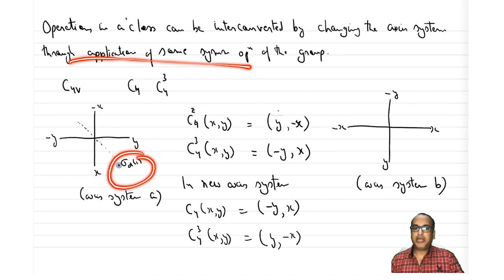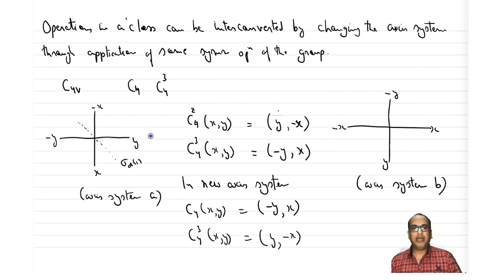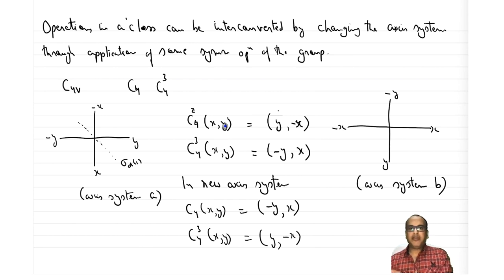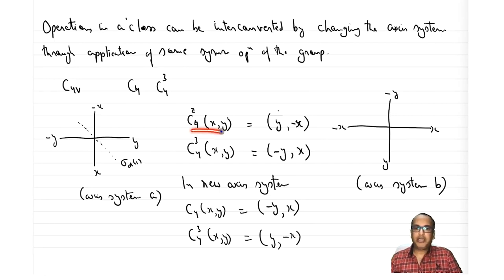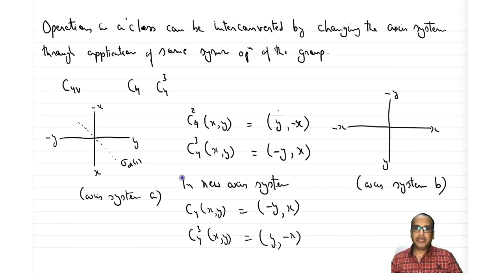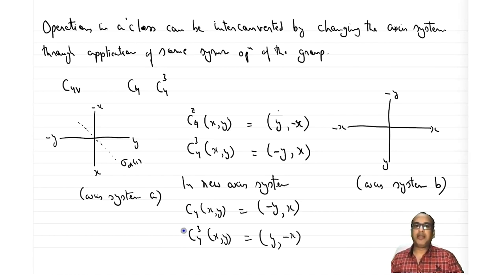The axis system is changed by one of the symmetry elements of the group — σd1 here. Operations in a class can be interconverted by changing the axis system from A to B through application of σd1. This is the physical significance: when we fix certain elements in a class, their effects are interconverted — it's like changing the axis system and doing the same operation again. If C4 gives a certain result in one axis system and a different result in another, C4³ gives the same result as C4 in the first axis system. That is why they are classified into the same class.